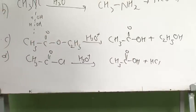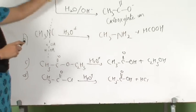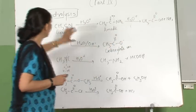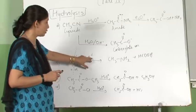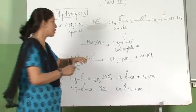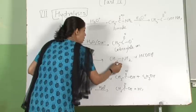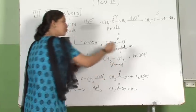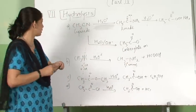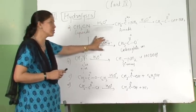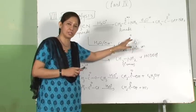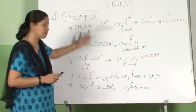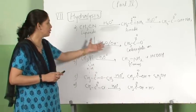In general, any isocyanide undergoes acid hydrolysis to give a primary amine, and formic acid is always one of the byproducts. Cyanide undergoes basic hydrolysis to give a salt of carboxylic acid, which can be called the carboxylate ion. I hope these hydrolysis reactions are clear.